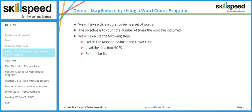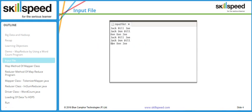Here we have created a text file containing our sample data — names of some people like Jack, Bill, and Joe. Create this file, give it a name such as input_file_1, and save it on your local file system.